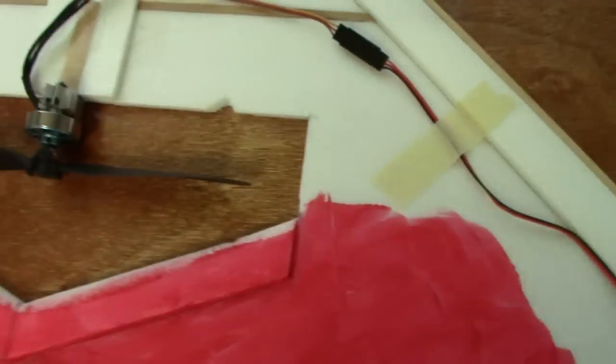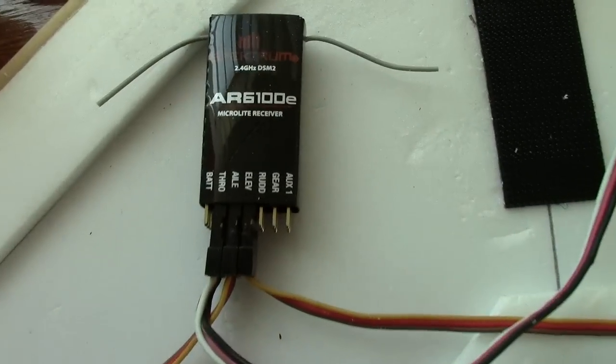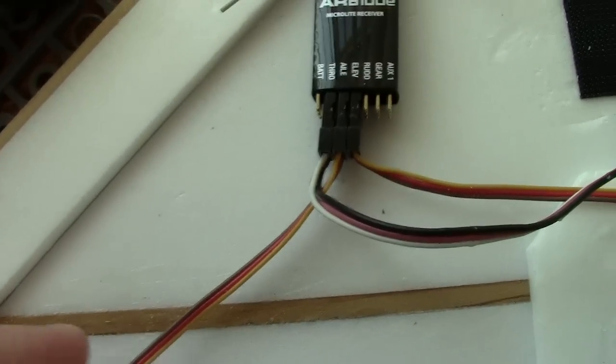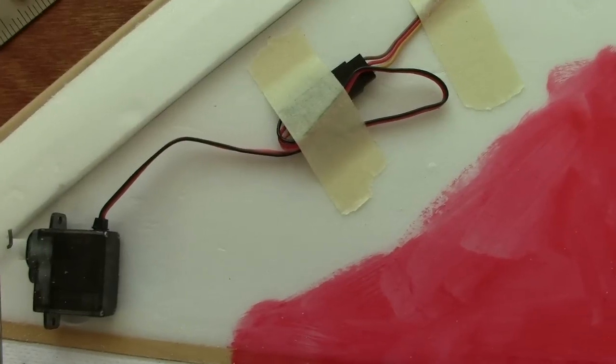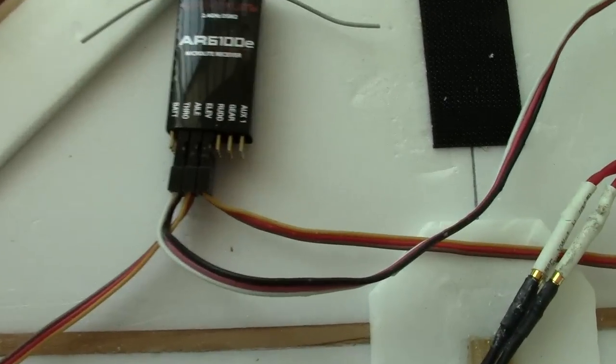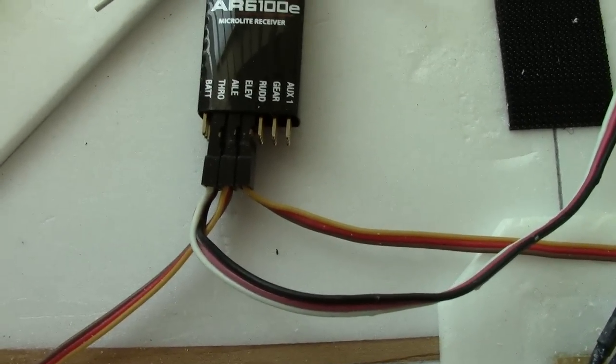Then what you have to do is plug in the aileron channel. It's going to be the left servo, and then the right servo goes into the elevator channel.